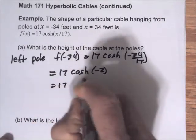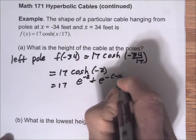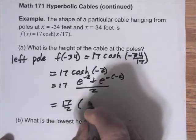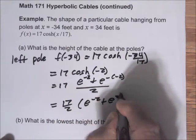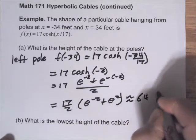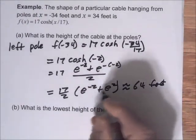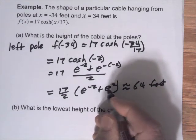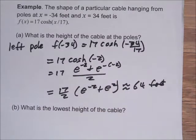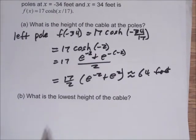That's 17 times (e to the negative 2 plus e to the positive 2) over 2, which is 17 over 2 times (e to the minus 2 plus e to the 2). We can put this in a calculator — it's approximately 64 feet. Most calculators can compute exponential functions; e is approximately 2.7, so it's approximately 2.7 to the minus 2 plus 2.7 to the 2. So the right pole is also approximately 64 feet.